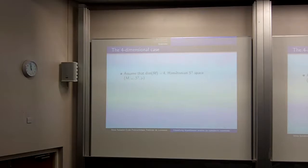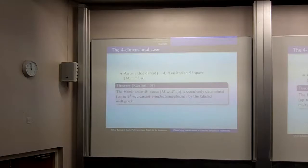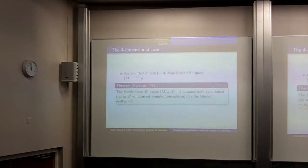In the four-dimensional case, I have a Hamiltonian S¹ space of complexity 1 (dim/2 − 1 = 1). The remarkable result of Karchon from 1997, based on work of Hattori, Ahara, and Odan, is that in dimension 4 the Hamiltonian S¹ space is completely determined up to suitable transformations by the labeled multigraph. She also gave a way of producing all possible multigraphs that can arise. For this type of complexity 1 space, all information is encoded in the labeled multigraph.